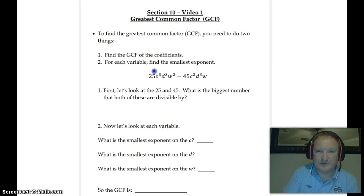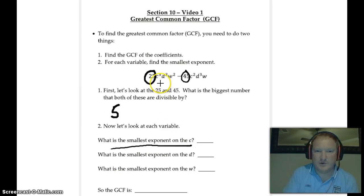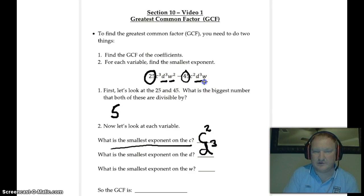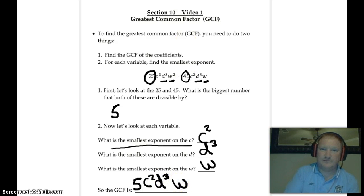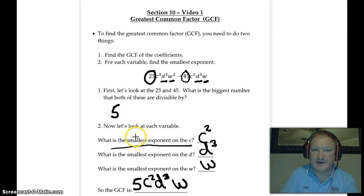That long method takes time, so here's the shortcut. First, find the GCF of the coefficients — that's 5. Then for each variable, look at the smallest exponent. For C, we have C squared, C cubed, and C squared — smallest is C squared. For D, we have D cubed and D cubed — so D cubed. For W, we have W squared and W — smallest is W. So the GCF is 5 C squared D cubed W. It's very easy to find the GCF of monomials using this method.